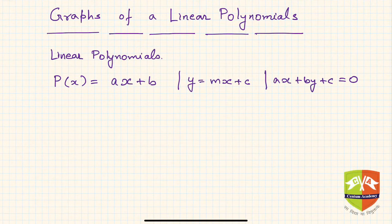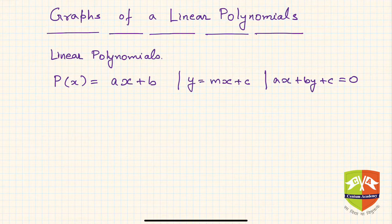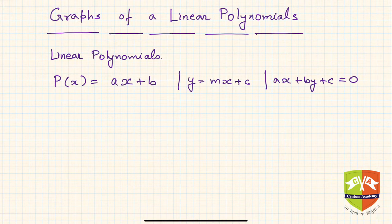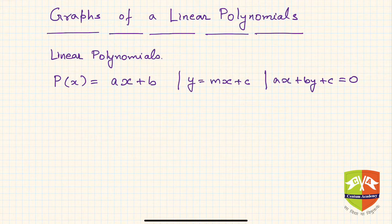Welcome again to another session on polynomials. In continuation with what we were doing, we will be doing graphs of linear polynomials today. In the previous sessions we have seen the definition of polynomials and different types of polynomials, and in the last session we discussed zeros of a polynomial. Now in this session we are going to discuss graphs of linear polynomials and how to draw them on a two-dimensional Cartesian coordinate system.